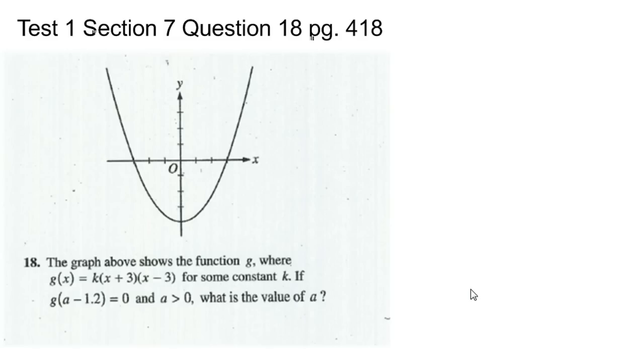Let's look at Test 1, Section 7, Question 18. This can be found on page 418. It's a function question, and this is actually a very easy question if you know a little bit about functions. It says the graph above shows the function g, where g of x equals k times (x + 3) times (x - 3) for some constant k. If g of (a - 1.2) equals 0, and a is greater than 0, what is the value of a?